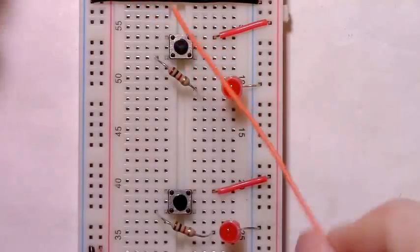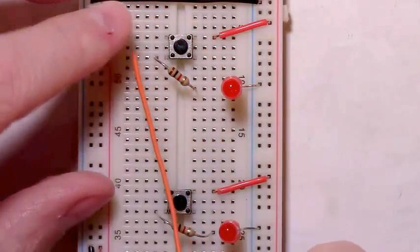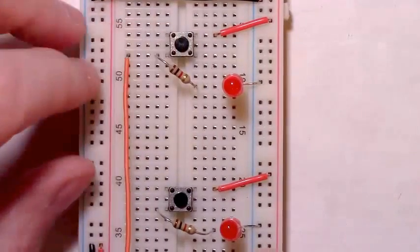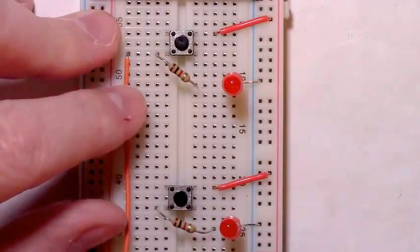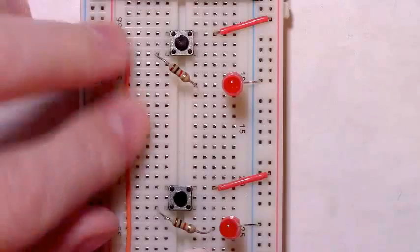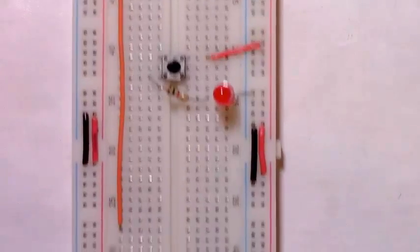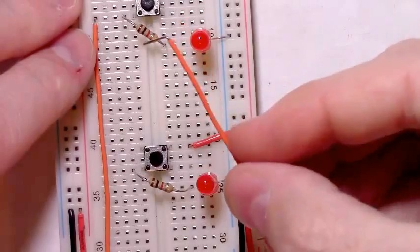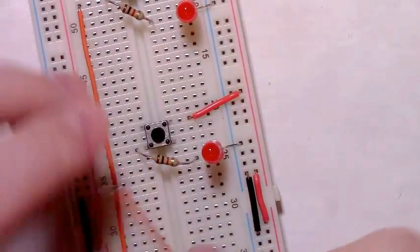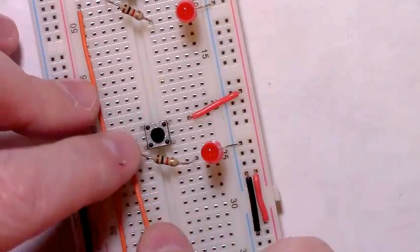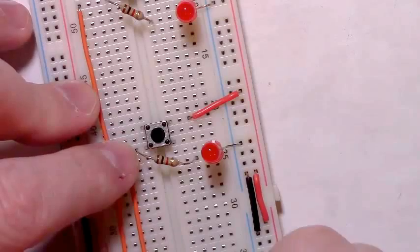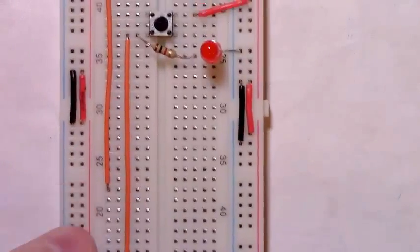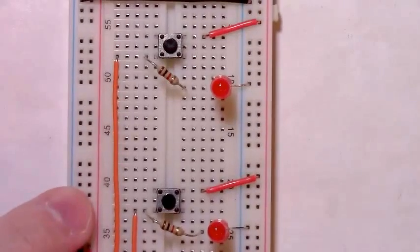Add our first piece of wire, putting it in the bottom left-hand, in the same rail that the bottom left-hand leg of our momentary button is located. Just add in a piece of wire, send it down the breadboard. Repeat the same procedure on the bottom left-hand leg of the second momentary button, sending wire down the board.